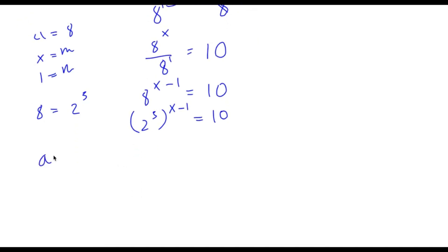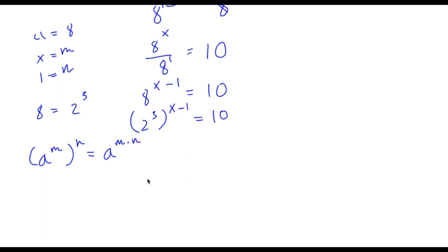If I have something in the form a to the power of m to the power of n, this is the same thing as a to the power of m times n. So 2 to the power of 3 to the power of x minus 1 is the same as 2 to the power of 3 times x minus 1, which equals 10.